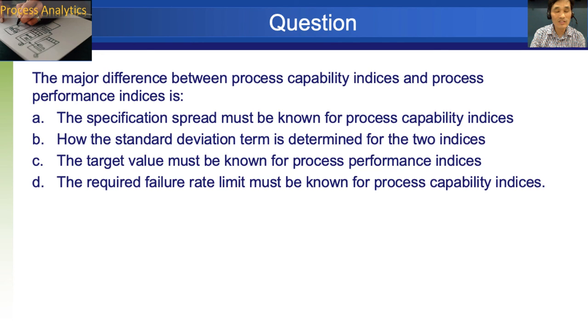Next question. The major difference between process capability indices and process performance indices. A, the specification spread must be known for process capability indices. It's not necessarily true. B, how the standard deviation term is determined for the two indices. Yes, that's correct. C, the target value must be known for process performance indices. Not necessarily. D, the required failure rate limit must be known for process capabilities. Not necessarily. So the answer is B.